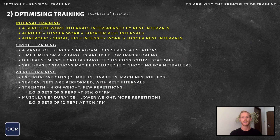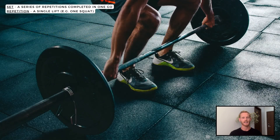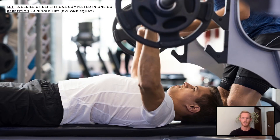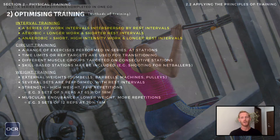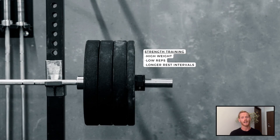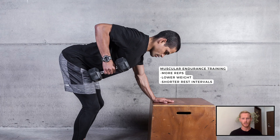Weight training uses external weights as a resistance to work against. For a given exercise, someone using weight training will typically perform several sets of consecutive repetitions with rest periods between each. Weight training can be used to target several fitness components, including strength, muscular endurance, and power. Those who wish to target strength should lift more weight but complete fewer repetitions per set — for example, three sets of five reps at 85% of their one repetition maximum. Those focused on muscular endurance should increase the number of reps per set and reduce the weight accordingly — for example, three sets of 12 repetitions at 70% of their one rep max.